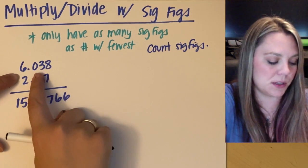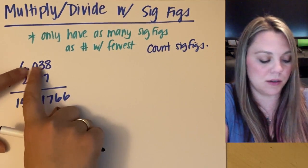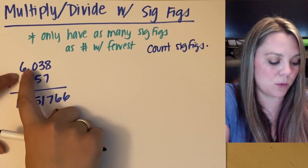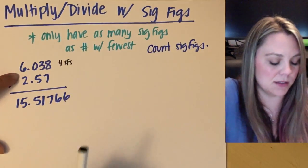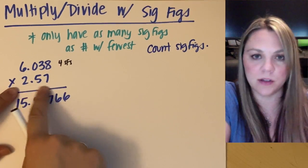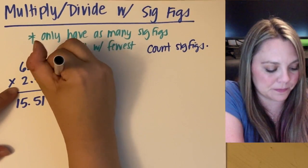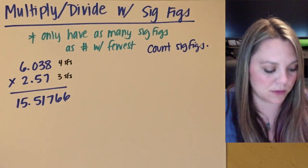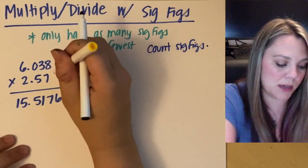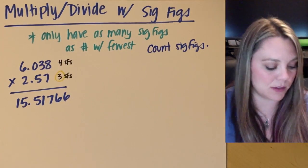All right, in this first number, I have a zero that's trapped, so it's significant. So I have one, two, three, four sig figs. In this answer, or in this number, I have one, two, three sig figs. All right, I can only take the number of the fewest, right, the fewest sig figs, so three. So my answer can only have three sig figs.